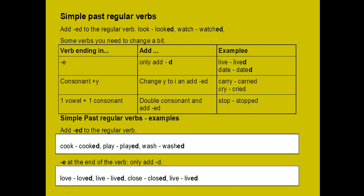Simple past regular verbs — add -ed to regular verbs: cook → cooked, play → played, wash → washed. Düzenli fiillere -ed takısı ekliyoruz. I cook → I cooked, I play → I played, you wash → you washed. Also: verbs ending in -e, add only -d — love → loved, leave → lived, close → closed.